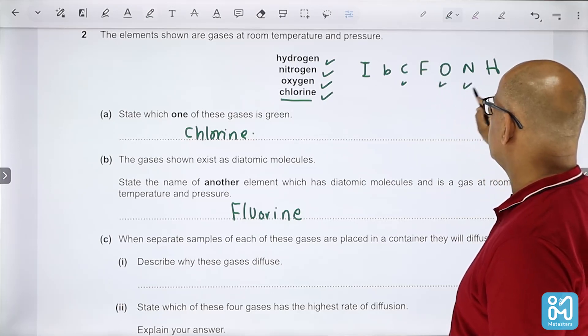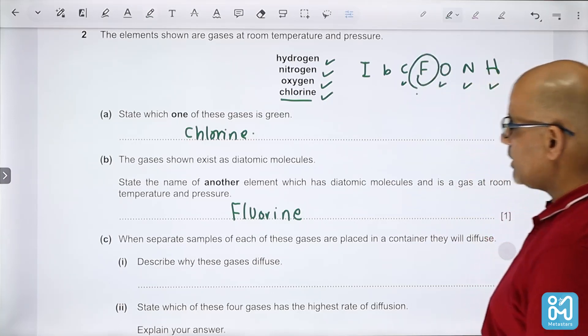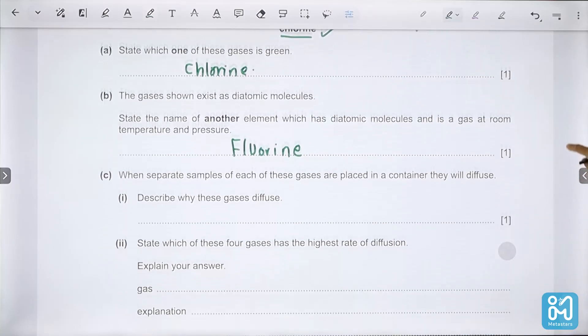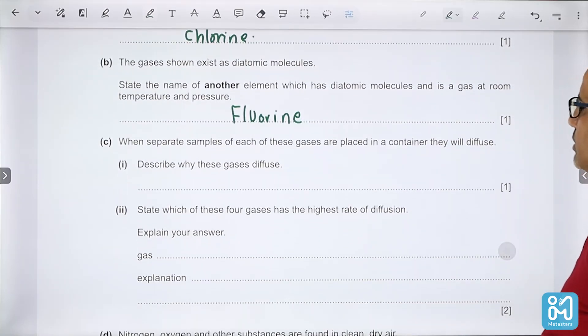The gases shown exist as diatomic molecules. State the name of another element which has a diatomic molecule and is a gas at room temperature and pressure. To remind yourself of the diatomic gases, I brought clay for our new house. If you mentioned fluorine gas which is pale yellow, it works.